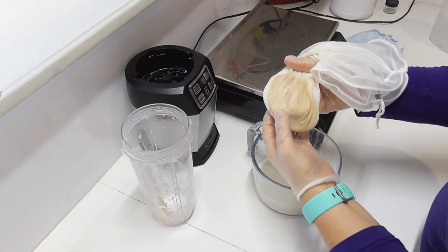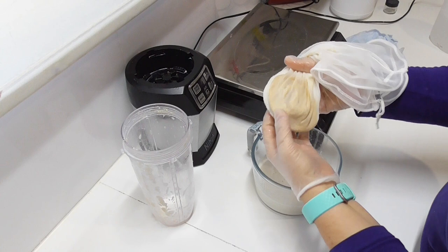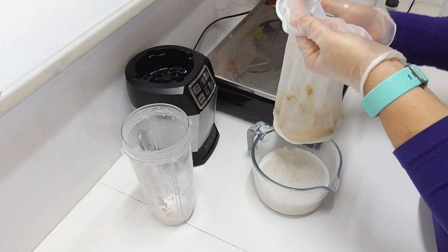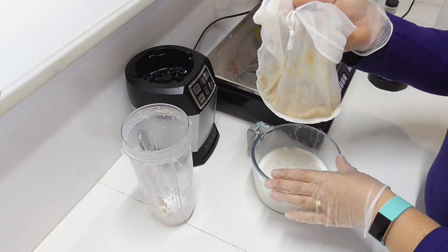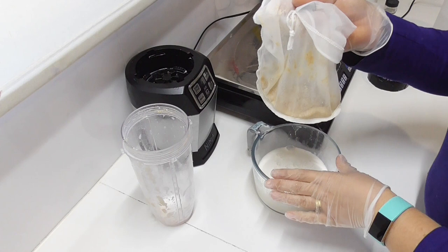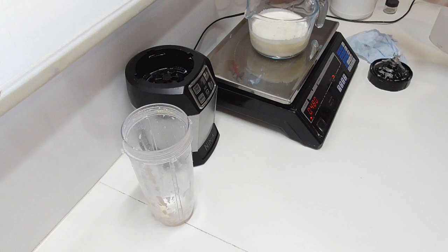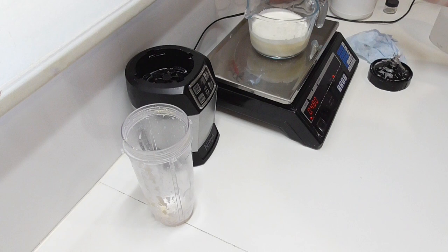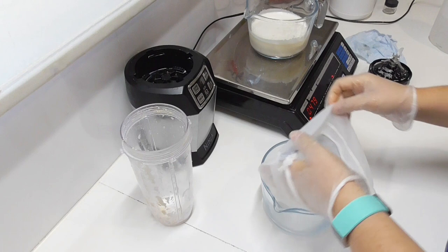All right, so I've given that a really good squeeze, and you can see we've got all of that ground up oat left in my bag. So I'm going to go and empty that out into my little spot that I've got out the front of the garden where I put all of my natural matter that can break down into the garden bed there. Then I'm going to come back and I am going to strain this again just to make sure I've got every ounce of that oatmeal out of it. All right, so I just want to have a quick look to see how much I've got in here. So I've got 480 grams out of that. That's a pretty good amount of milk there.